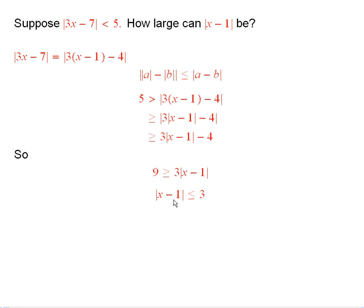And so, absolute value of x minus 1 is less than or equal to 3. In other words, x is within a distance of 3 from 1.